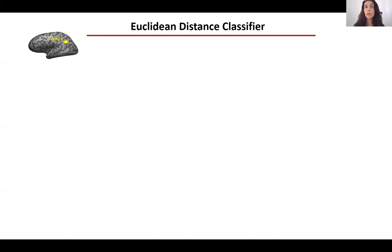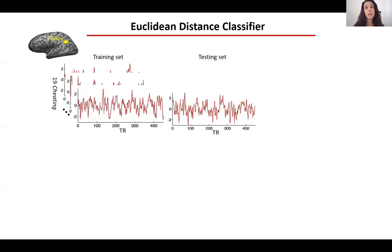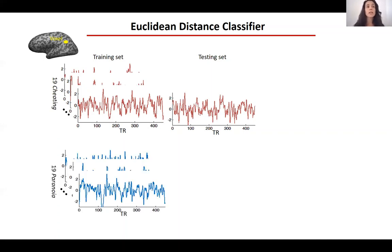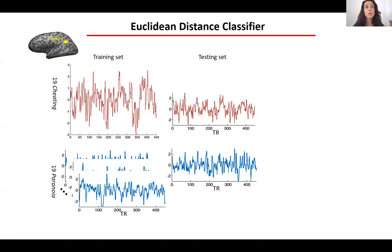In each voxel or region of interest (ROI), we extracted data from the 20 participants that listened to the story after being exposed to the cheating context. We had 19 participants serve as a training set and one participant as a testing set. In this leave-one-out algorithm, we also used 19 paranoia-context participants as a training set and one as a testing set. We then calculated the mean response of the cheating training set in each specific voxel or ROI.